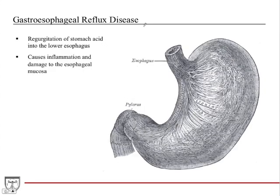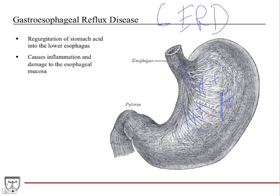Regarding clinical pearls: gastroesophageal reflux disease (GERD) is the regurgitation of stomach acid into the lower esophagus. There is significant pharmaceutical investment in this area with proton pump inhibitor drugs. The acid erodes and damages the epithelial lining of the esophagus, and this is usually caused by weakness in the lower esophageal sphincter.